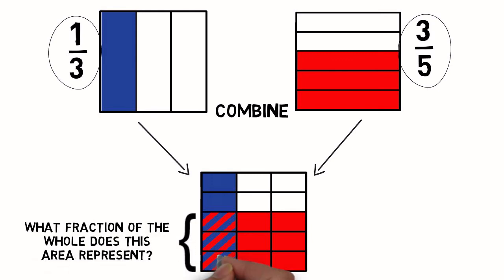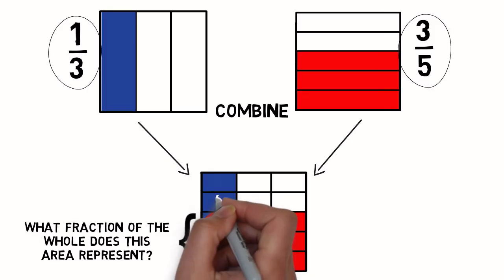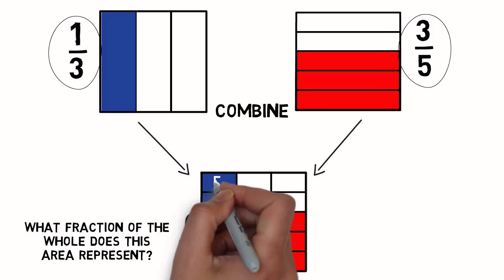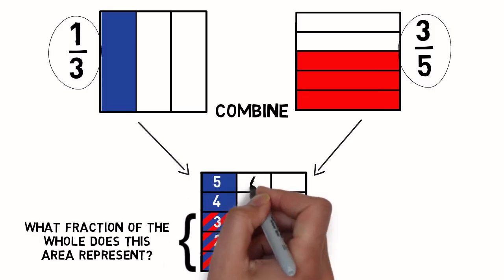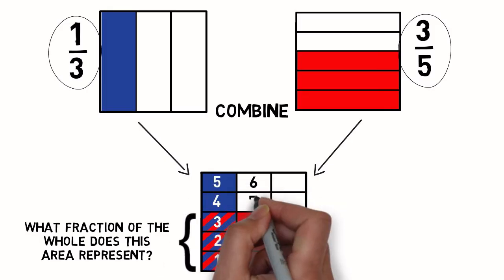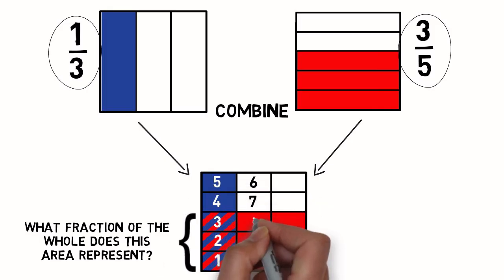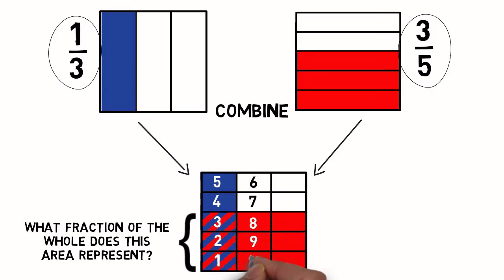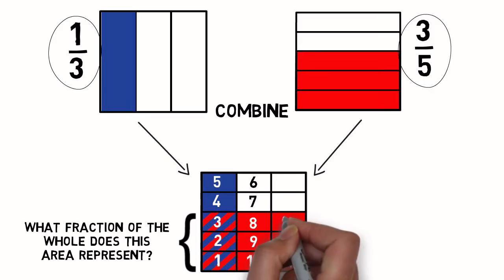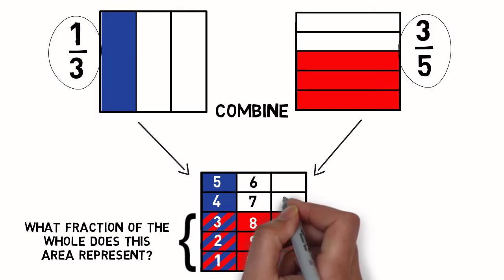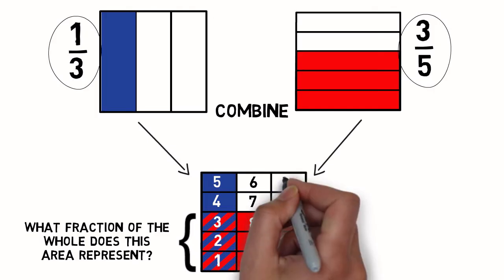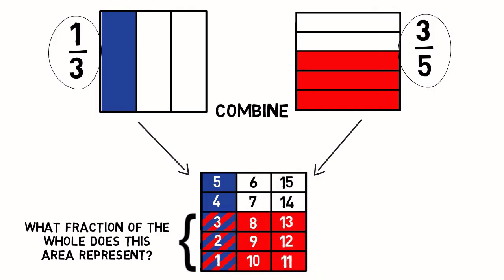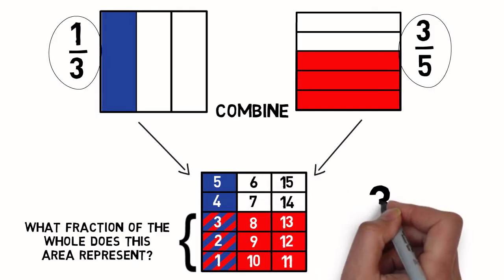Let us count: one, two, three, four, five, six, seven, eight, nine, ten, eleven, twelve, thirteen, fourteen, fifteen. Three-fifteenths.